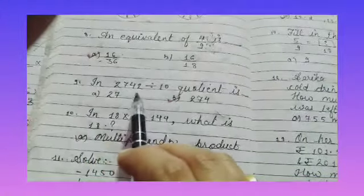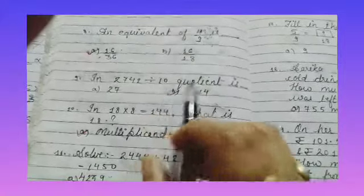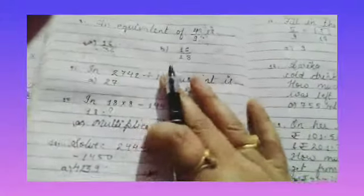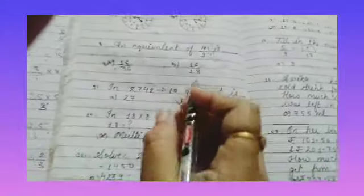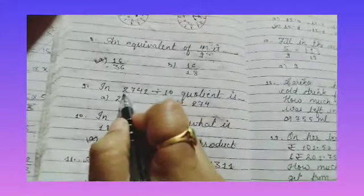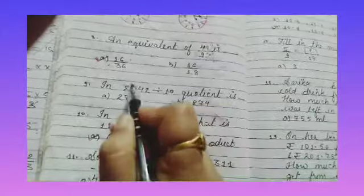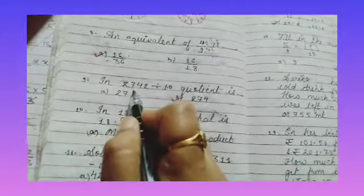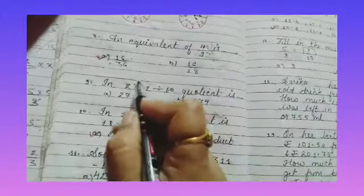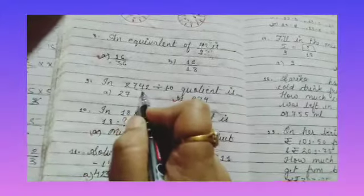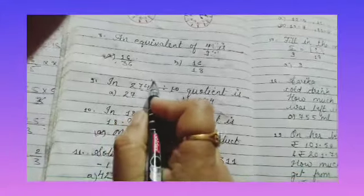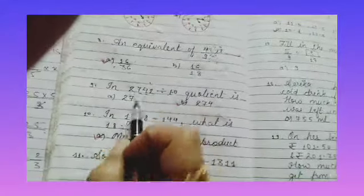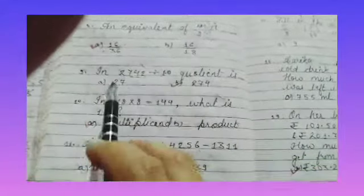In 2742 divided by 10, quotient is dash. So 10, 2 is 20, 7 remainder. Then 10, 7 is 70, 4 remainder. Then 10, 4 is 40. So 2, 7, 4 will be the quotient and 2 will be the remainder.